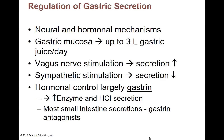The hormonal control — the big one: the stomach makes gastrin, and then gastrin, the hormone itself, will increase the amount of enzymes made and increase the amount of hydrochloric acid made. The small intestine, since gastrin increases the making of gastric juices, has various secretions that are going to inhibit gastrin production. By the time food gets into the intestines, the stomach's job is done — we don't want it making any more gastric juices.